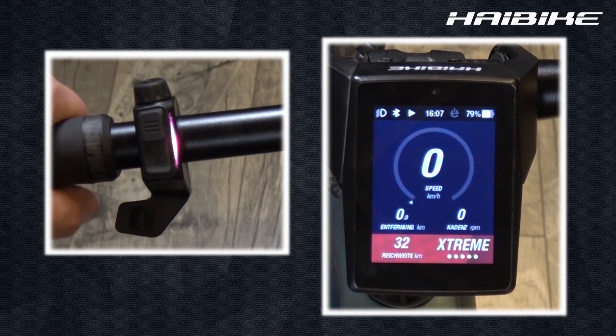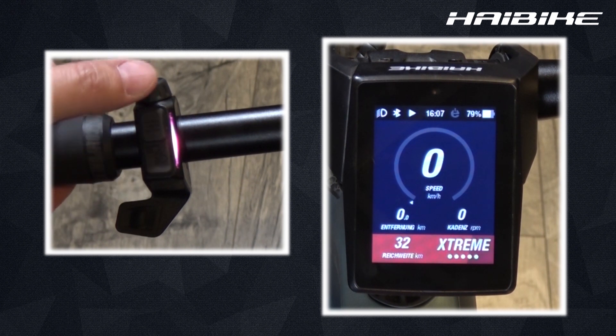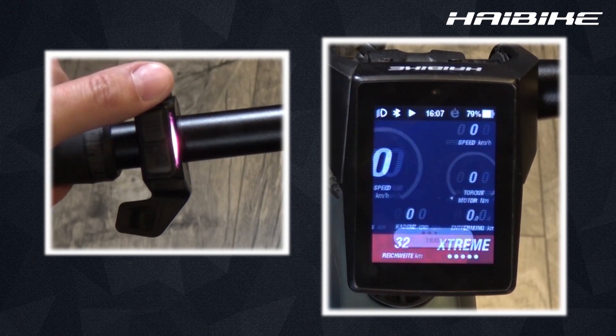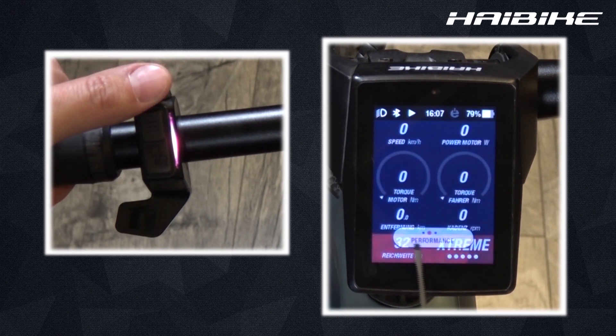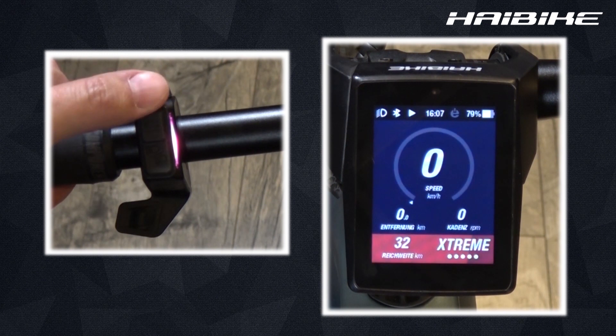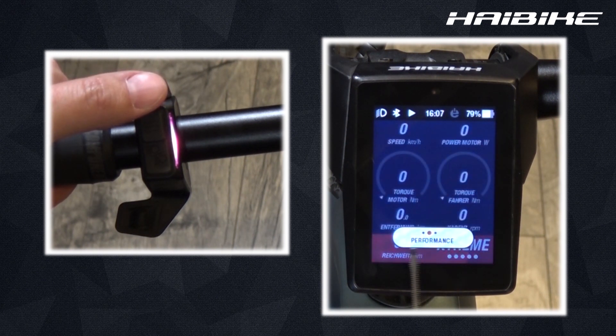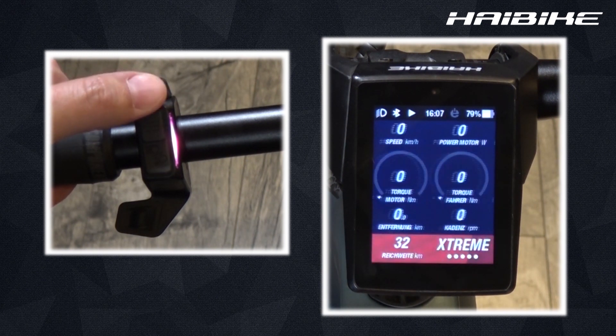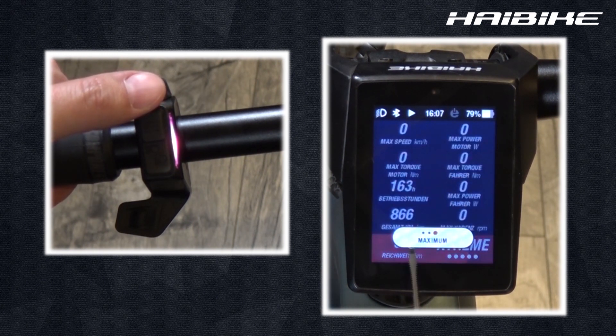Here I have deactivated two screens because I don't currently need them. So if I now flip through the screens, all I see is the dynamic screen, the performance screen, and the maximum value screen.